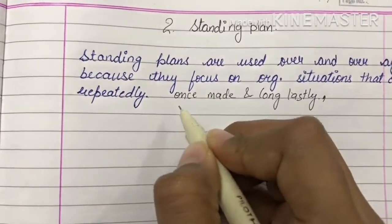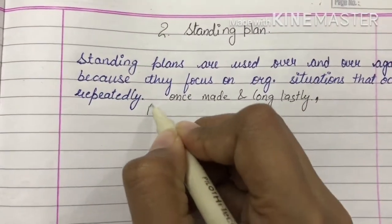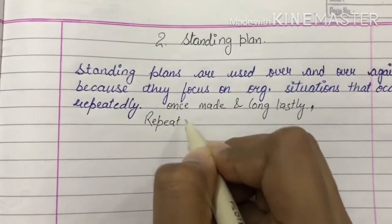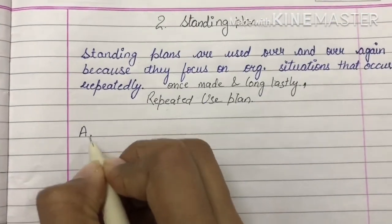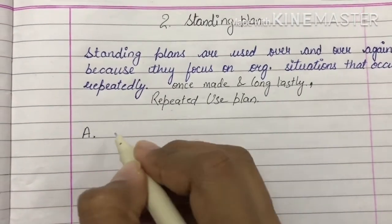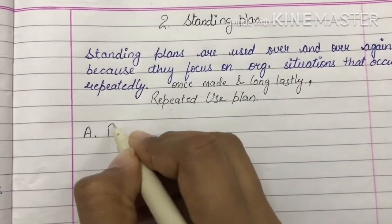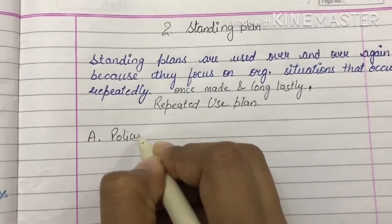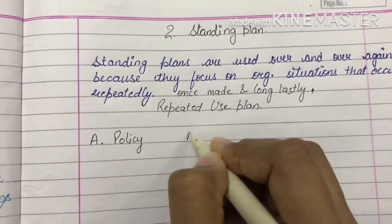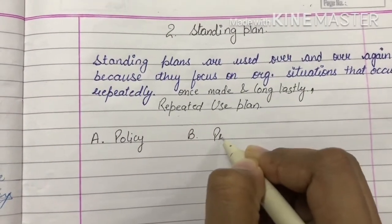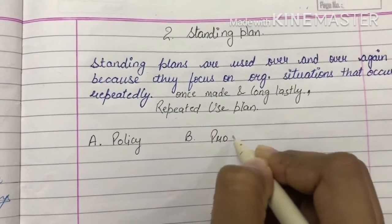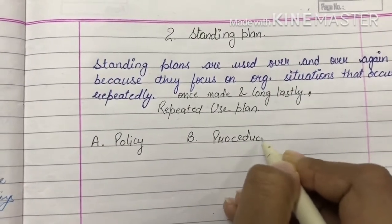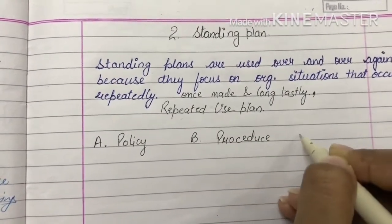Standing plan का दूसरा नाम repeated use plan भी है. So in standing plan, we have policy, procedure, rule, and method.